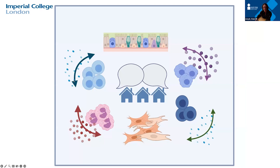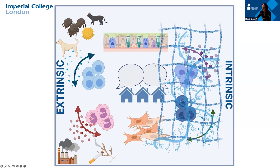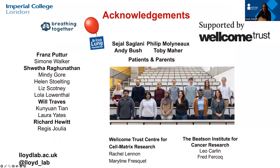The take-home message is that there are lots of cells resident in the lungs and also cells transported to the lungs when something happens when we breathe in. The communication between those different cells — their crosstalk — is really important for the outcome of lung disease. It's very important to know who your neighbors are and what they're talking about, and this can be influenced by external factors such as pollution, but also very local factors in that immediate environment.